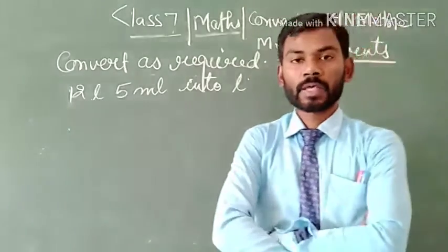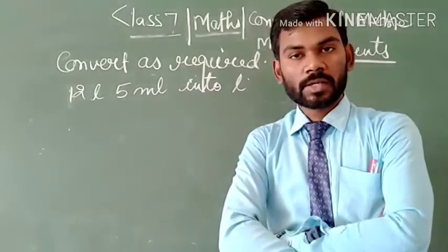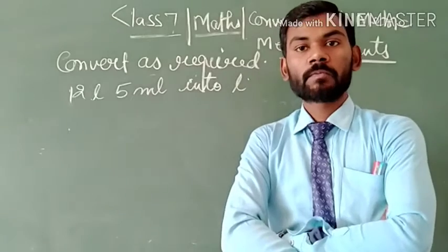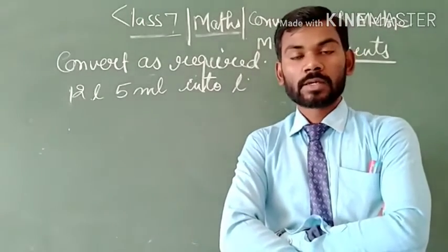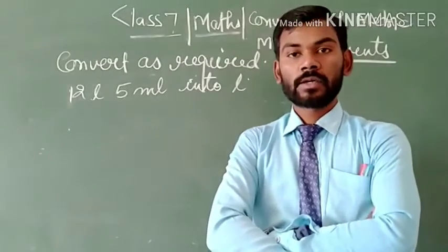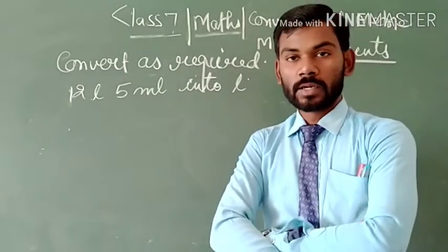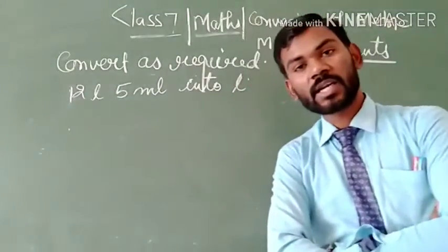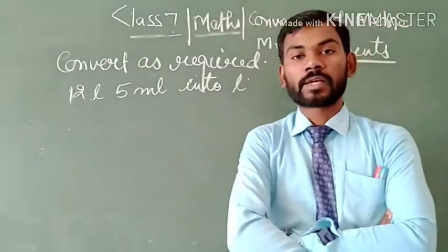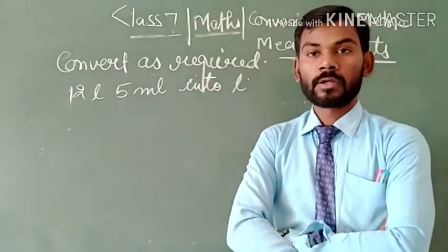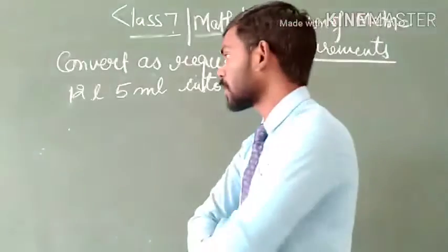Here we can convert it by two methods. The first method is to start from the smallest unit — millilitre, centilitre, decilitre, and so on going forward. Or we can directly use the relationship between litre and millilitre, since if we convert litre into millilitre we shall use the fundamental units.